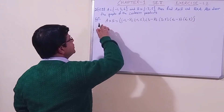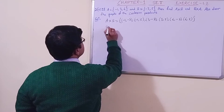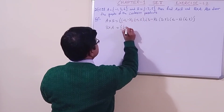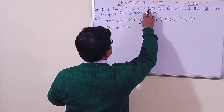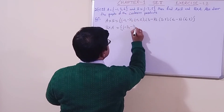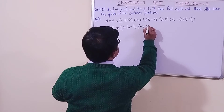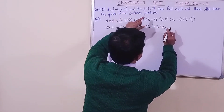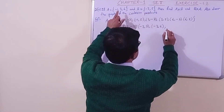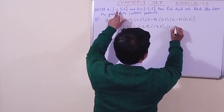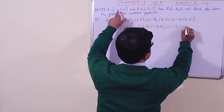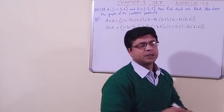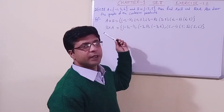We have found A cross B. Now what is left is B cross A — this is a very easy sum. -3 will be paired first with -1, giving (-3, -1), then (-3, 3), then (-3, 6). The function of -3 is done. Then 5 with -1, giving (5, -1), then (5, 3), then (5, 6). Now we have completed and found A cross B and B cross A.